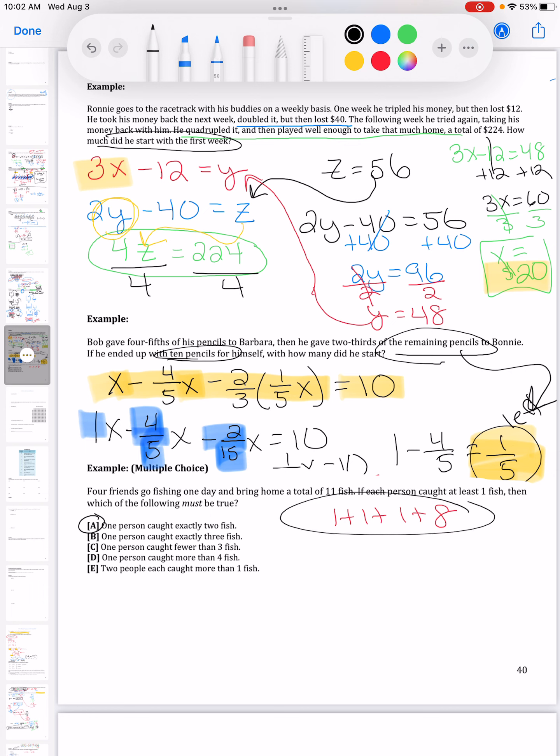So I'm just going to start with A here. Can I make eleven in such a way that I would make this false? So one person caught exactly two fish. Yep, I've got it right here. One plus one plus one plus eight, that's eleven fish. I made it work without anybody having two fish.